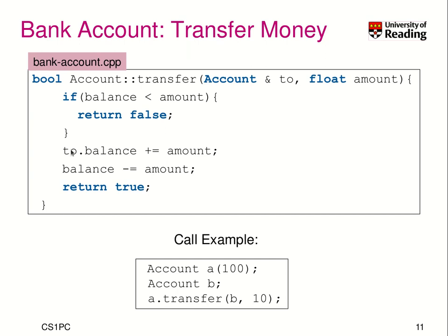Otherwise, we know we have the amount of money available. What we should do is take account two and add the balance amount to it. Then, from our current account, we subtract the amount of money. Here's an example of how we could use it: we create account A with 100 units of money, and then account B — since we don't specify the constructor explicitly, it is initialized to zero. We then transfer from A to B 10 units of money. That's a potential way of using this function.